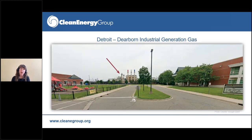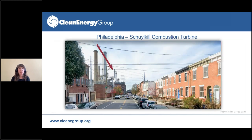A little more about where they're located — this one usually gets some gasps. This is the Dearborn industrial gas turbine in Detroit, and that is an elementary school and a playground right there. The community has been very active in opposing expansion of this plant, but the stacks still exist in that community. When there are high ozone days, the kids cannot go out to play. Another example is the Schuylkill combustion turbine in Philadelphia — you can see those houses on the right and those stacks on the left, right in the community. We know what they do, we know where they are, we have a lot of alternatives to close these down, and we need to get moving on that.